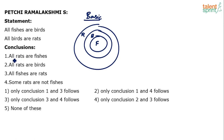Now, look at the conclusions. The first one: all rats are fishes. Do you find all rats to be fishes? No, it's not guaranteed. So, first one is wrong. It cannot be a definite conclusion — it is a possibility, but not a definite conclusion. So, all rats are fishes is wrong. Second: all rats are birds. No, not all the rats are birds. Only some rats are birds. So, this also is wrong. One and two definitely do not follow.